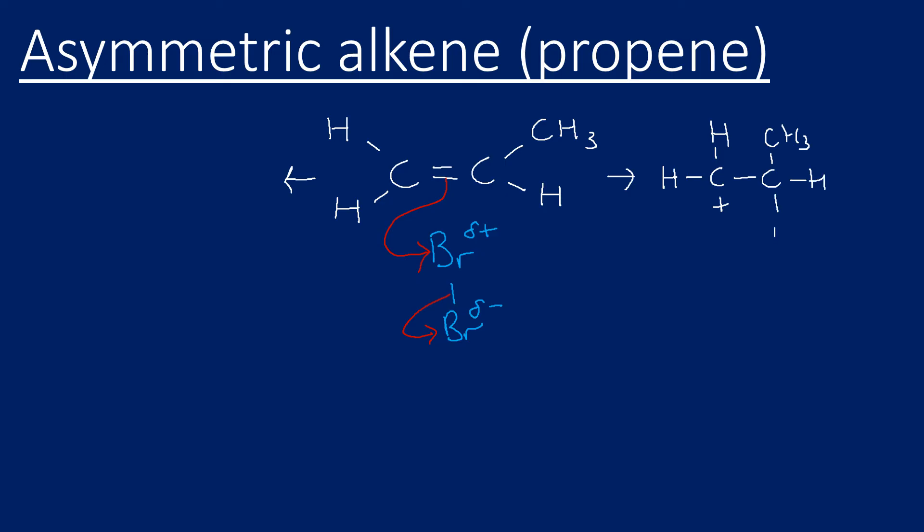So if the bromine attaches to the carbon on the right, we're going to have a primary carbocation. If it attaches to the carbon on the left, we're going to end up with a secondary carbocation, which yes is more stable.